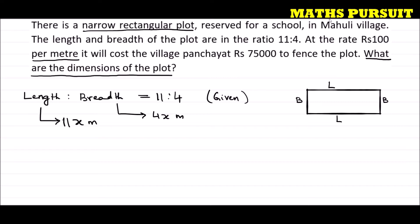We have considered the length to be 11x meters. We know that both sides of the length of a rectangle are equal, and similarly both sides of the breadth are equal — so both breadth sides are 4x.